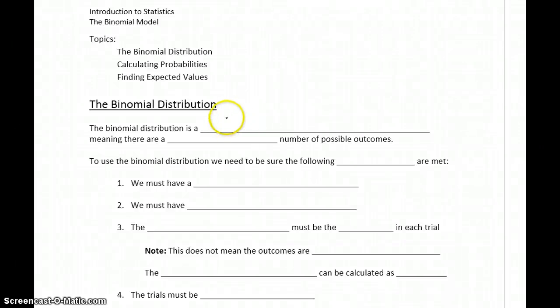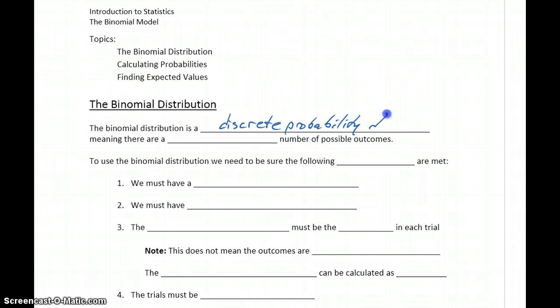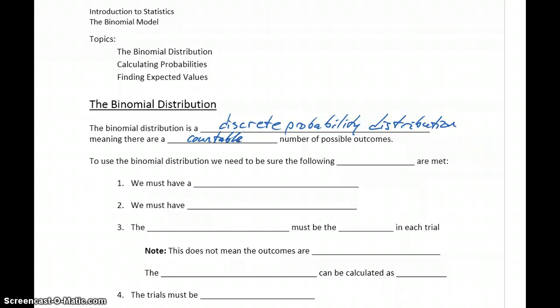The binomial distribution is a discrete probability distribution, meaning that there are a countable number of possible outcomes. So it might still be that there's an infinite number of outcomes, but we could eventually count to that. And specifically in this case, we're talking about whole number outcomes.